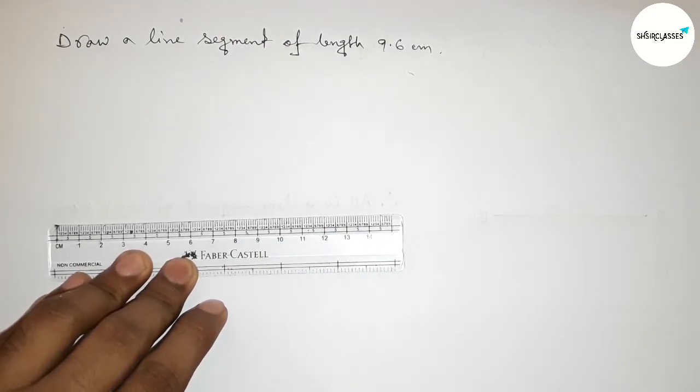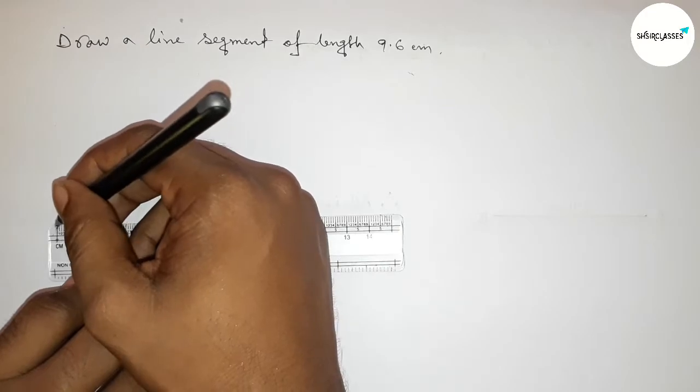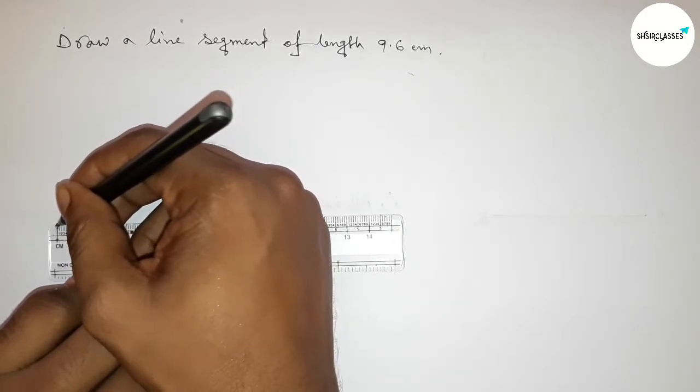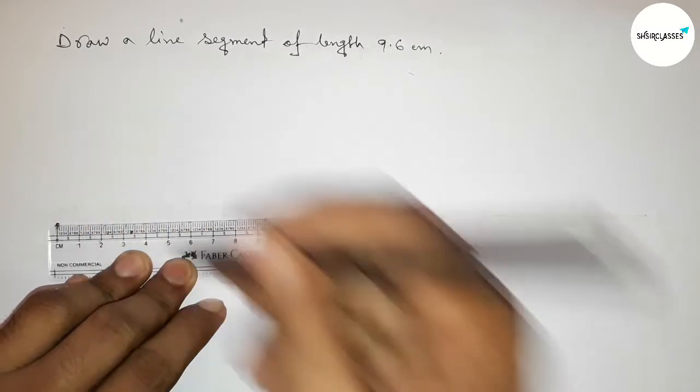Then measure the length 9.6 centimeters. So first counting - this is the starting zero, so first marking the starting zero here.